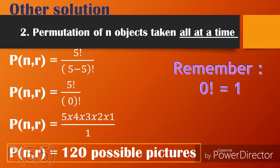Another solution using the formula: P(n, r) = n! / (n − r)!. Substituting, P(5, 5) = 5! / (5 − 5)! = 5! / 0!. Since 0! = 1, we have 5! / 1 = 5 × 4 × 3 × 2 × 1 = 120 ways.